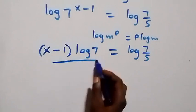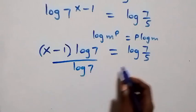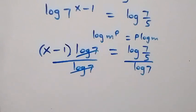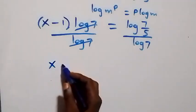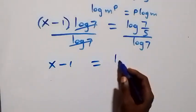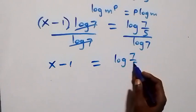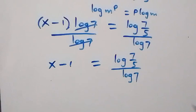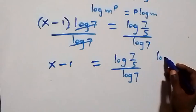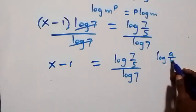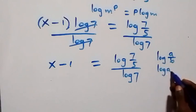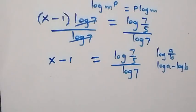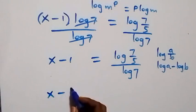The next step: we divide both sides by log seven. Log seven cancels on the left, and we have x minus one equals to log of seven over five, divided by log seven. Applying the law of logarithms, log a over b is the same as log a minus log b, so x minus one equals to log seven minus log five, all over log seven.